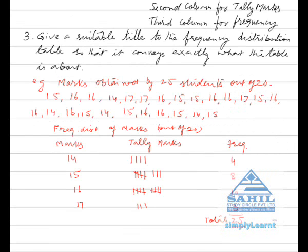For example, marks obtained by 25 students out of 20: 15, 16, 16, 16, 14, 17, 17, and so on. These are 20 numbers in order.